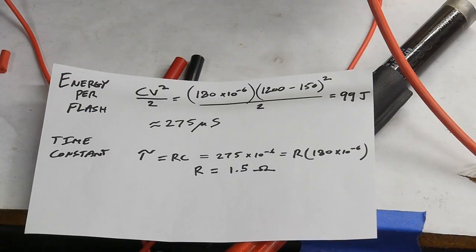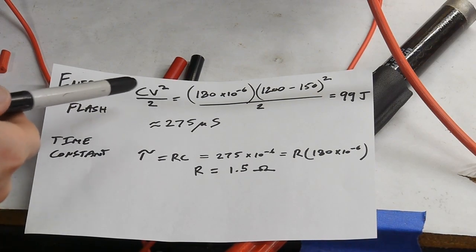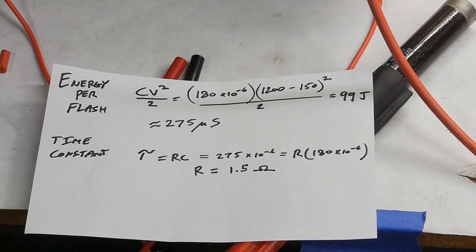So to figure out the amount of energy per flash we've got one half CV squared. C is 180 microfarads, those are those two strings of capacitors that I have wired up, and the voltage is actually 1200 minus 150 which is the residual that's left in the capacitor bank after it fires and so we end up with about a hundred joules.